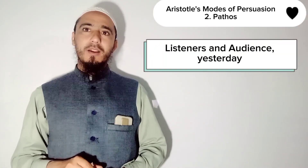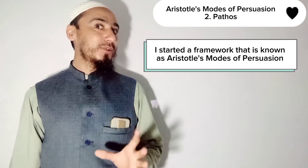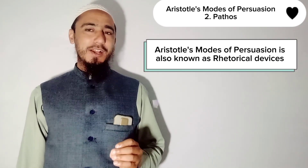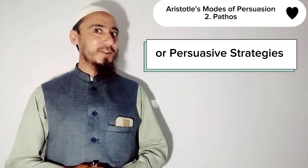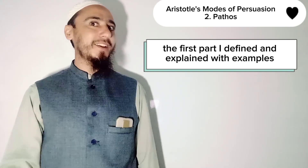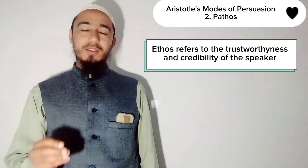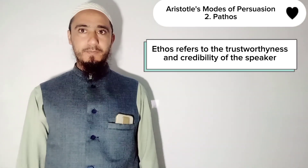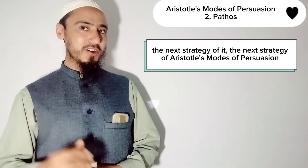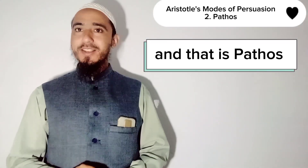Let me introduce — yesterday I started a framework that is known as Aristotle's modes of persuasion, also known as rhetorical devices or persuasive strategies. The first part I defined and explained with examples, and that was ethos. Ethos refers to the trustworthiness and credibility of the speaker. Today I'm going to teach you the next strategy of Aristotle's modes of persuasion, and that is pathos.